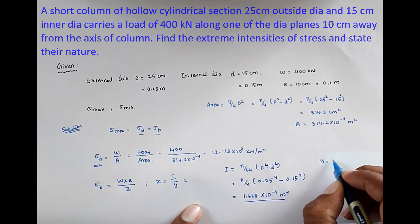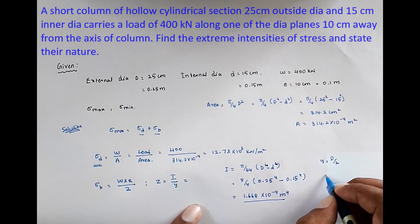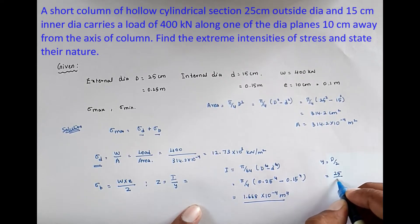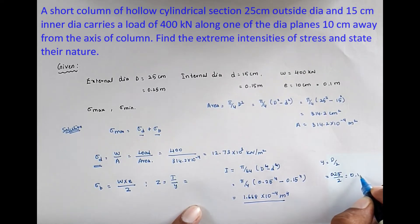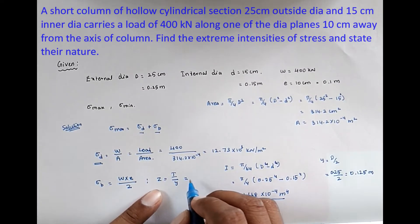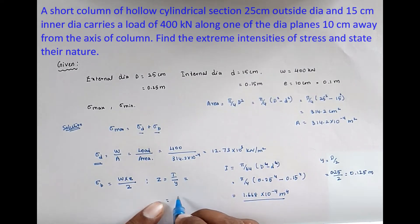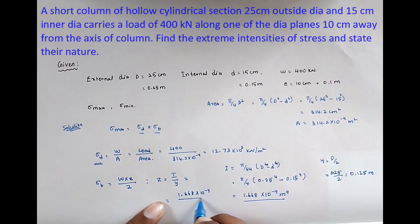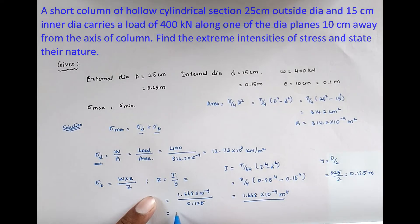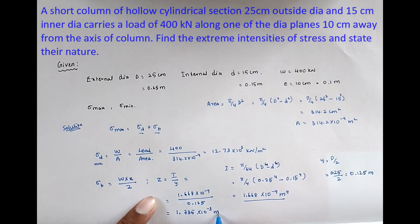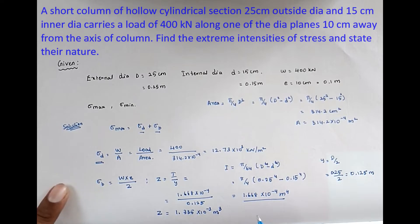Then Y = D/2 = 0.25/2 = 0.125 m. So Z = I/Y = 1.668 × 10⁻⁴ / 0.125 = 1.335 × 10⁻³ m³.